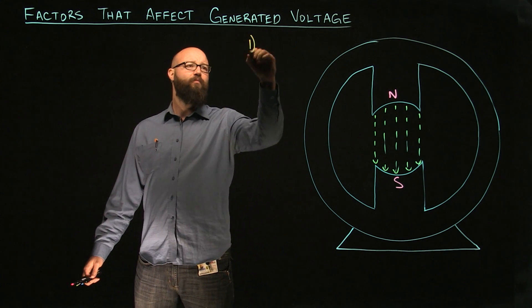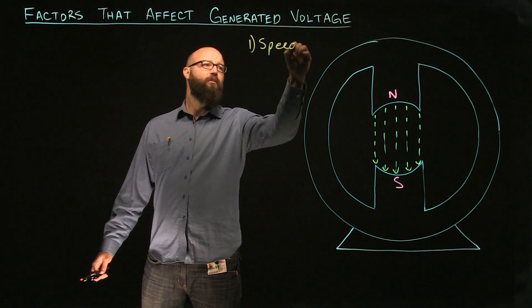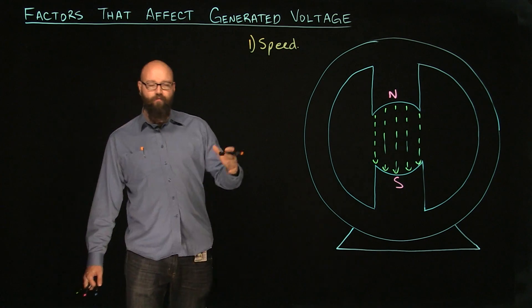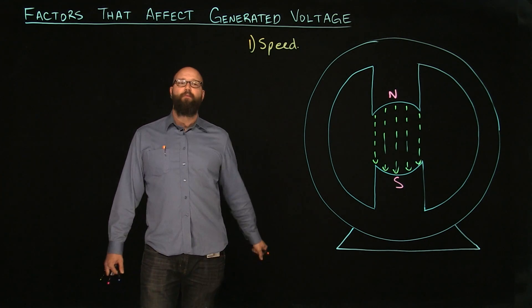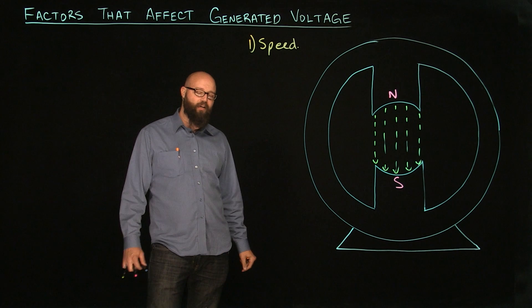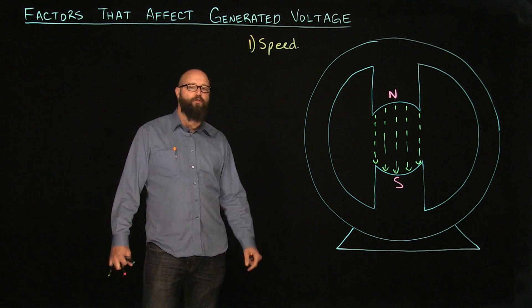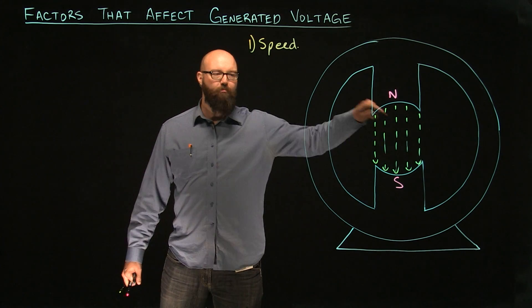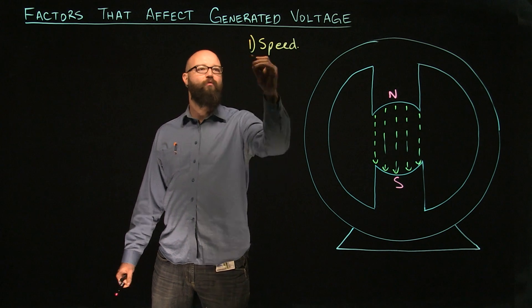Number one, speed. Faraday's Law very clearly states the faster we move that conductor through the magnetic field, the more induced voltage we're going to get. So if I was to rotate my conductor faster, I would get a higher induced voltage.